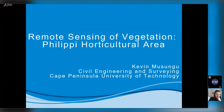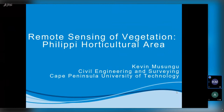My name is Kevin Musungu. I am the head of program for geomatics at the Cape Peninsula University of Technology in Cape Town. We are part of the civil engineering and surveying department, and our interest is really in using GIS for mapping from satellite images. With this particular case study, we used QGIS to semi-automatically extract vegetation from satellite photographs.